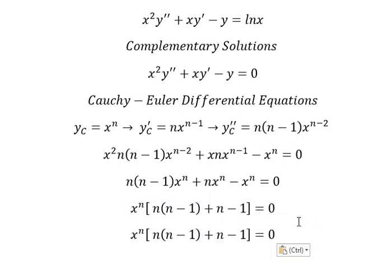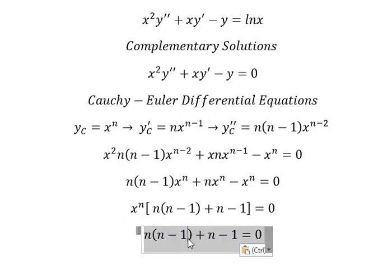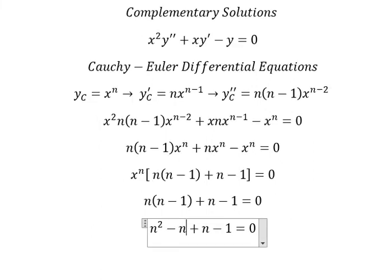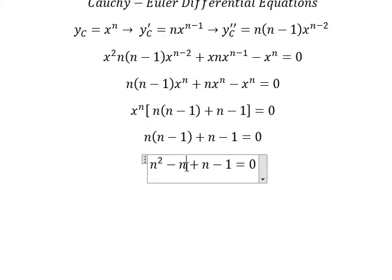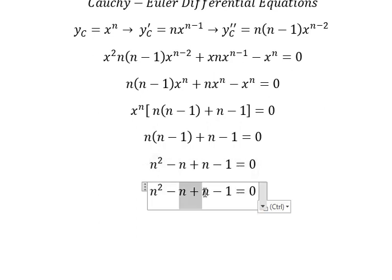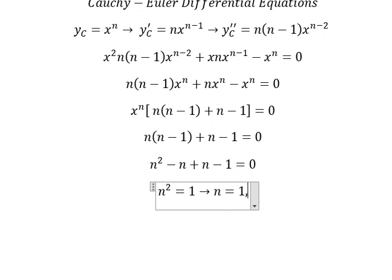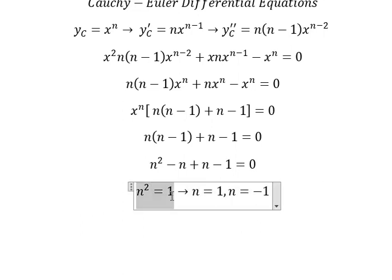Now we need to simplify. We have n squared minus n, and we simplify negative n with positive n. Moving the constant to the right, we find n equals positive 1 and n equals negative 1.